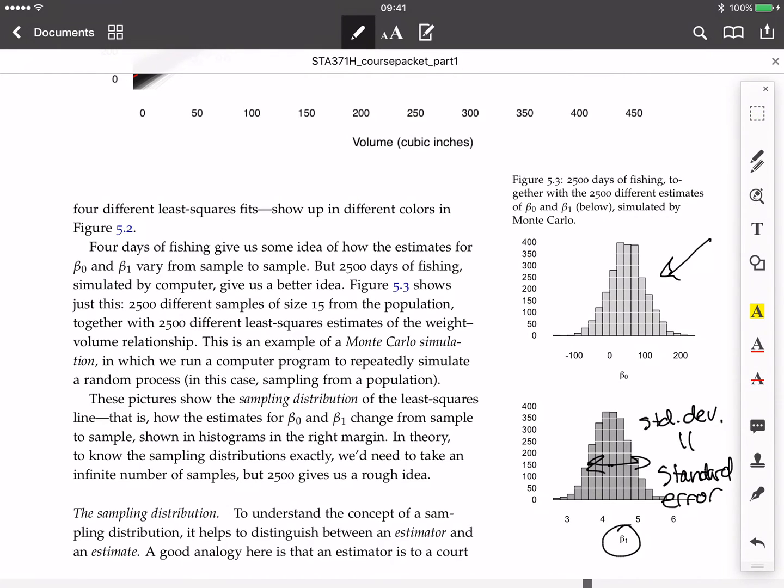And we would naturally summarize them, how variable they are, using the standard deviation, just like we would do for any histogram. And we just have this specific vocabulary word, the standard error, for the standard deviation of the sampling distribution.